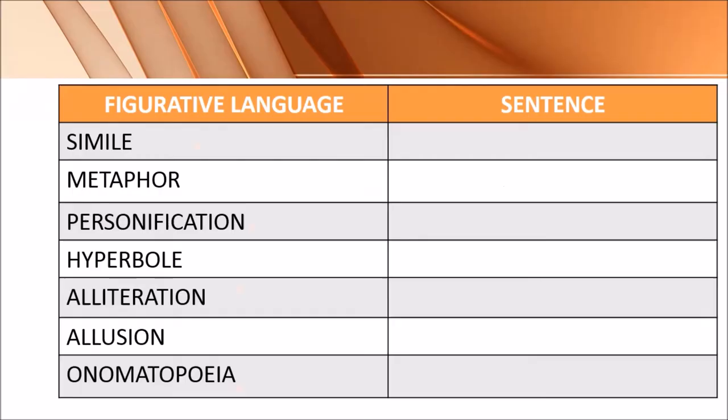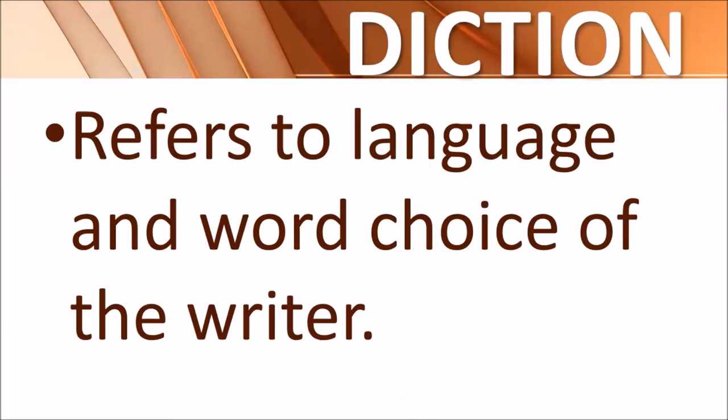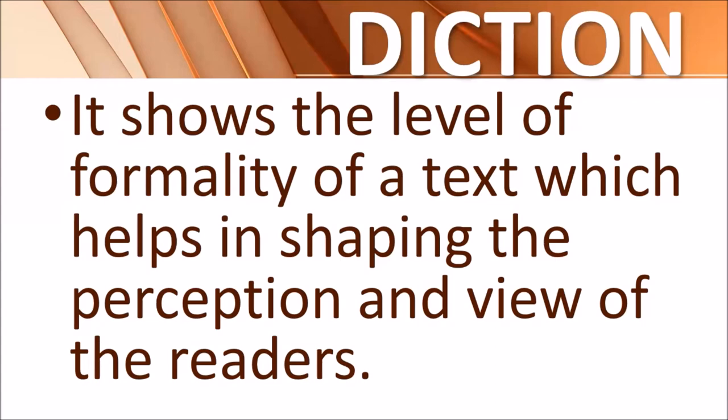Now let's go and discuss diction. Diction refers to the language and word choice of the writer. It also shows the level of formality of a text, which helps in shaping the perception and view of the readers.